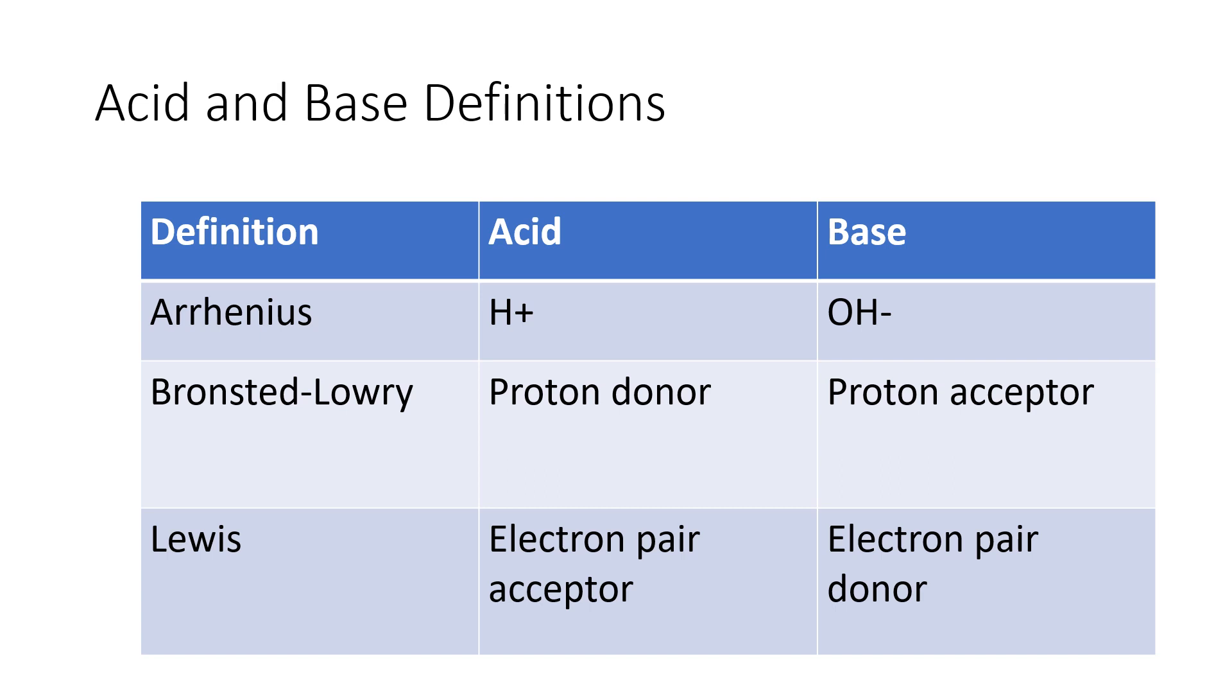Bronsted-Lowry proposes that an acid is a proton donor and a base is a proton acceptor. Lewis, on the other hand, says that an acid is an electron pair acceptor and a base is an electron pair donor. So let's take a closer look at the Bronsted-Lowry and Lewis definitions.